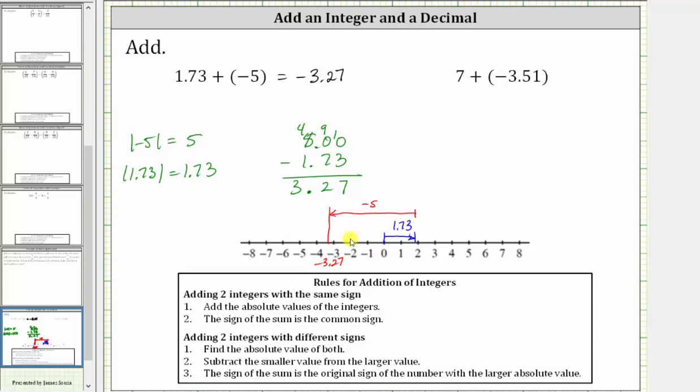Let's take a look at our second example. Here we have seven plus negative 3.51. For this sum, notice how the positive seven is going to outweigh the negative 3.51, and this sum will be positive.